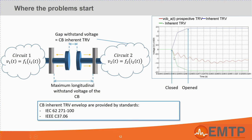In this situation, the risk of re-ignition is maximum. This is why it is usually the scenario to consider when performing a TRV analysis. And this is the default option in EMTP.